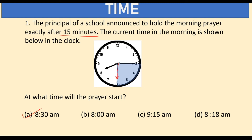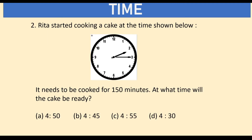Next question: Rita started cooking a cake at the time shown, which is 2 hours 15 minutes — or 2:15. It needs to be cooked for 150 minutes. At what time will the cake be ready? Remember, 1 hour is equal to 60 minutes.